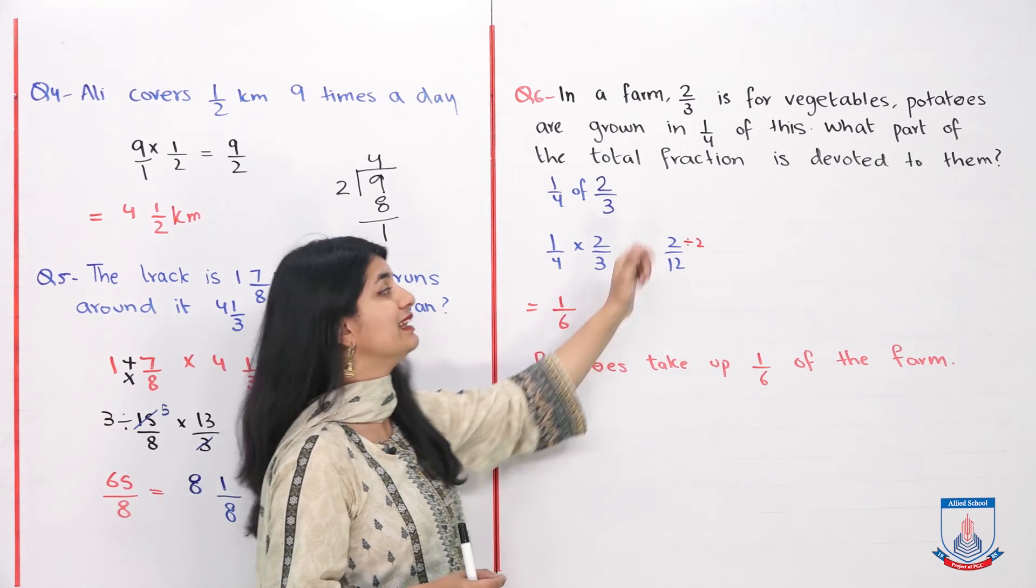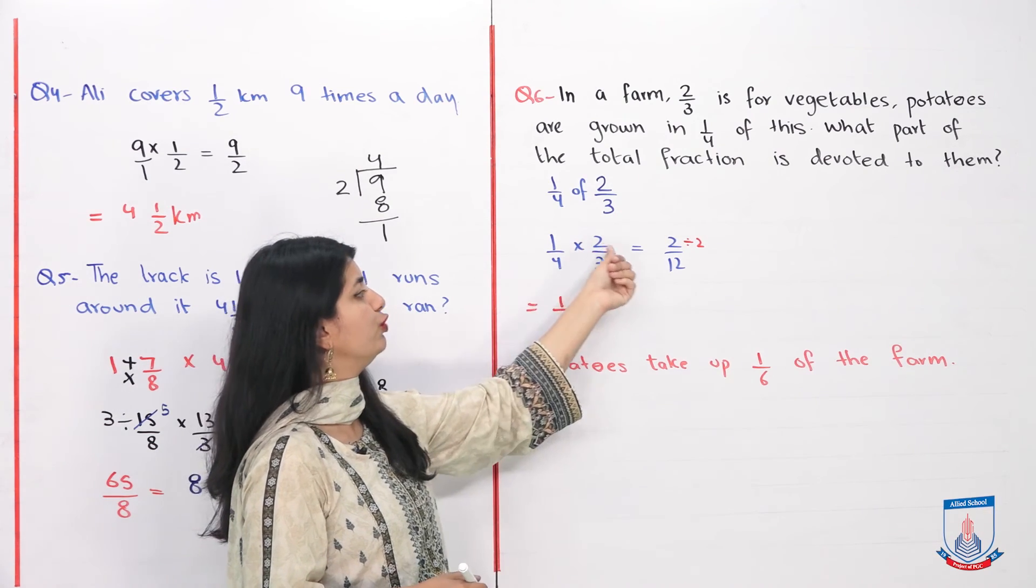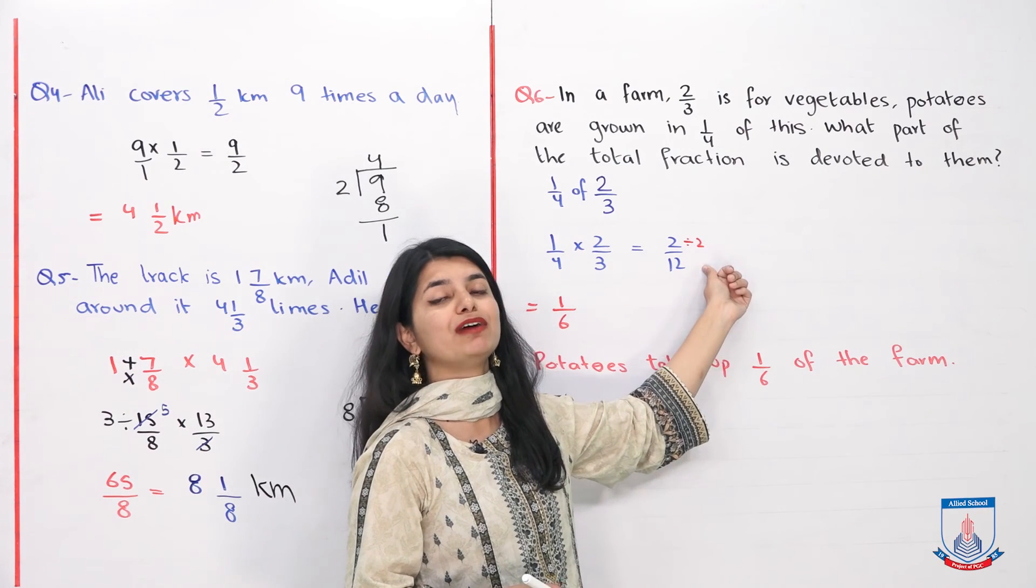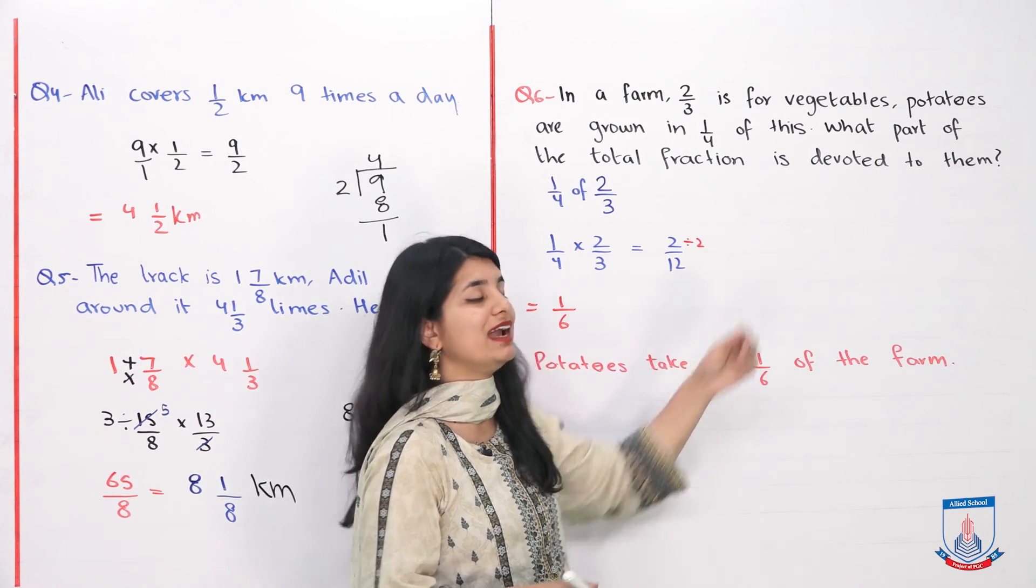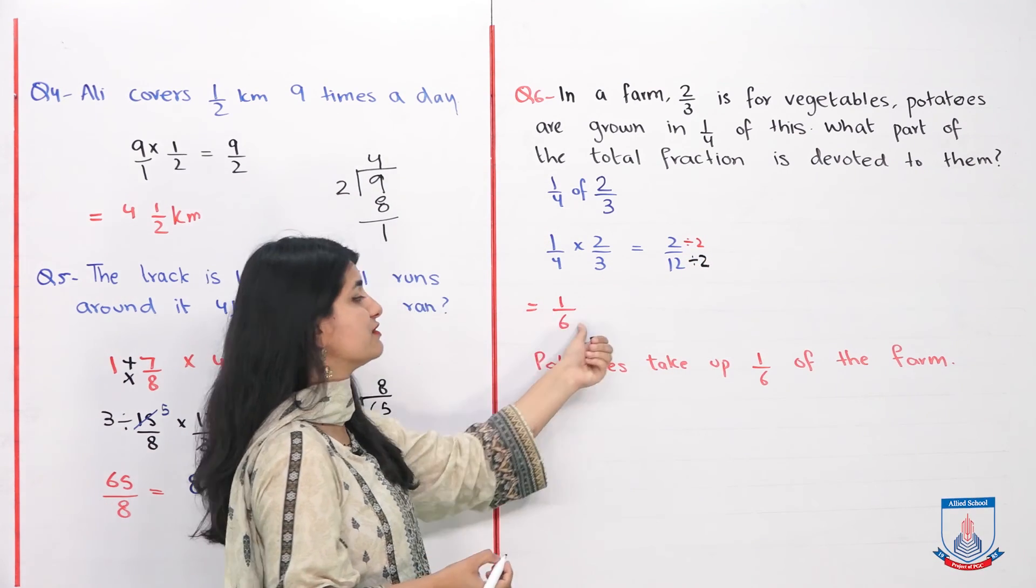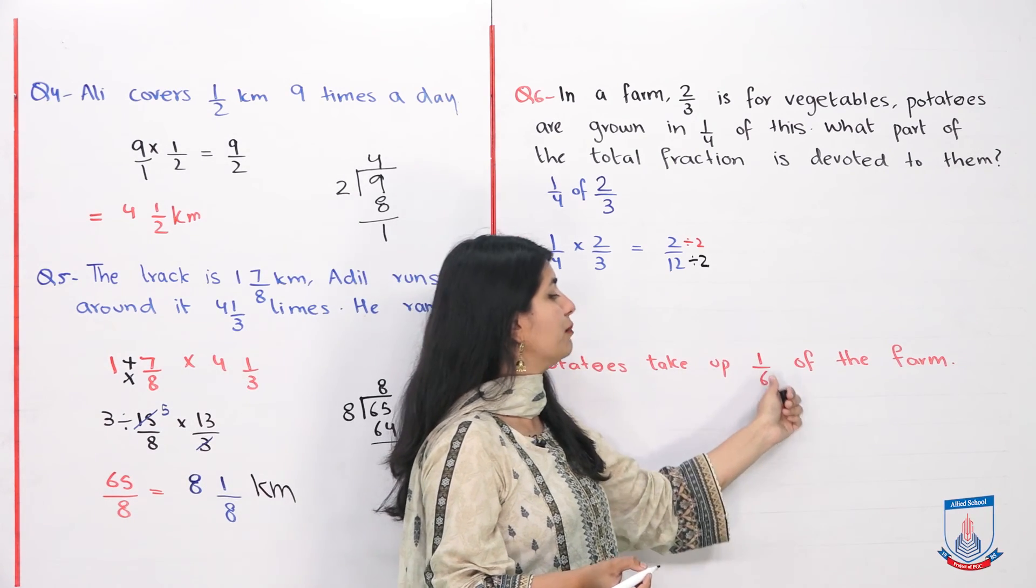We know that 1 over 4 is of 2 by 3 which is the vegetables. We take 'of' to mean multiply. 1 into 2 is 2, 4 into 3 is 12. Dividing both by 2, we get 1 by 6. So our answer is 1 by 6. Potatoes take up 1 by 6 of the total farm.